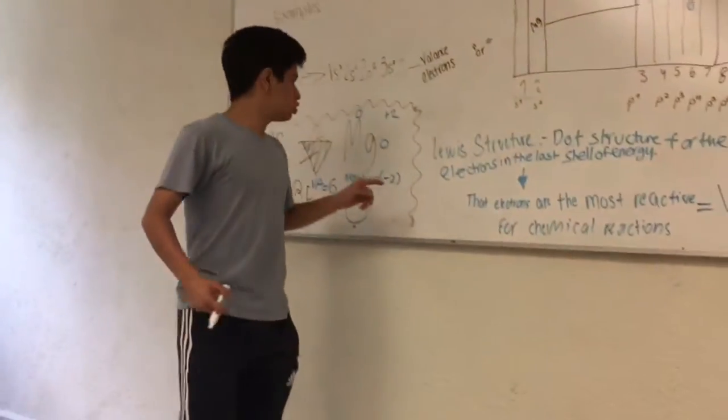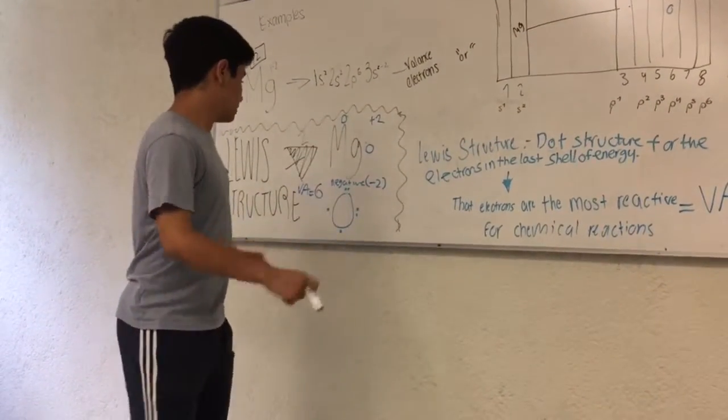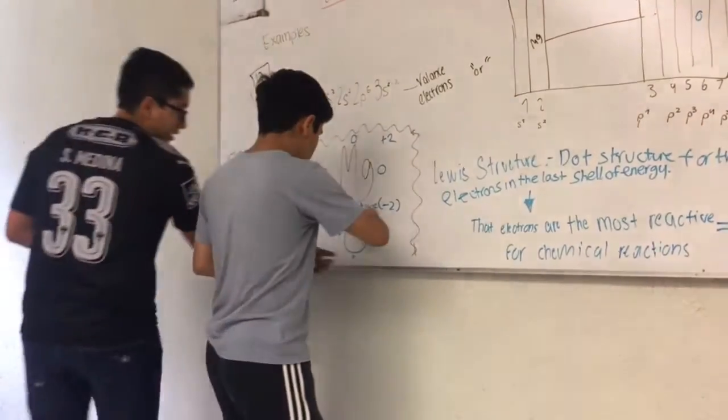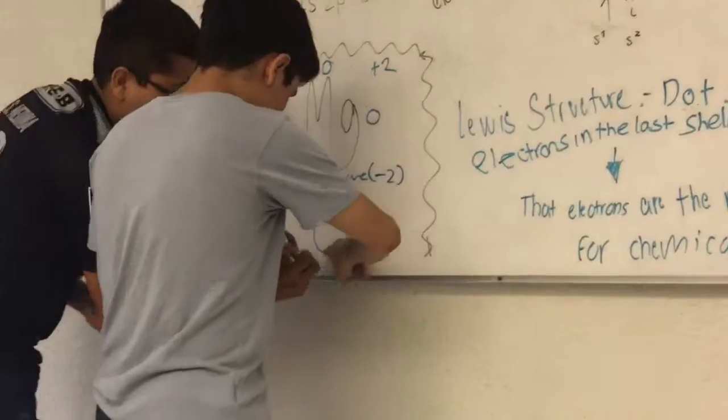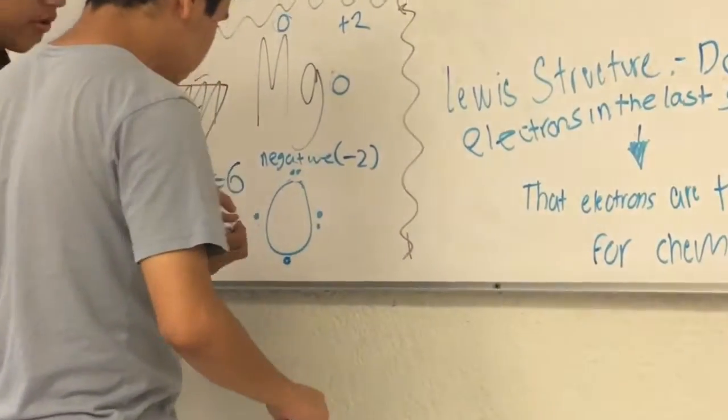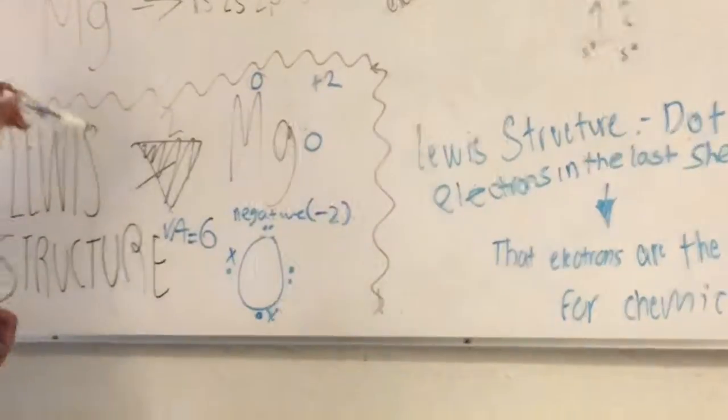But in this case, it has a negative charge, so we do not represent it with open dots. In this case, the negative charge is negative 2. So we identify the electrons and add 2 more electrons like this, and it represents the negative charge.